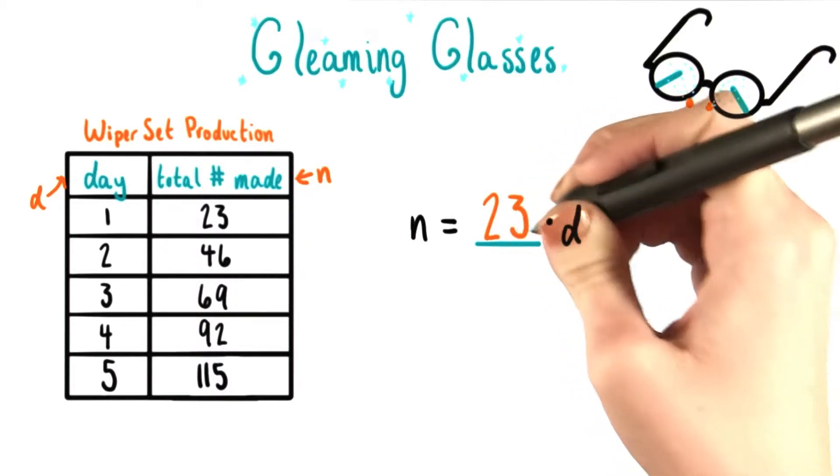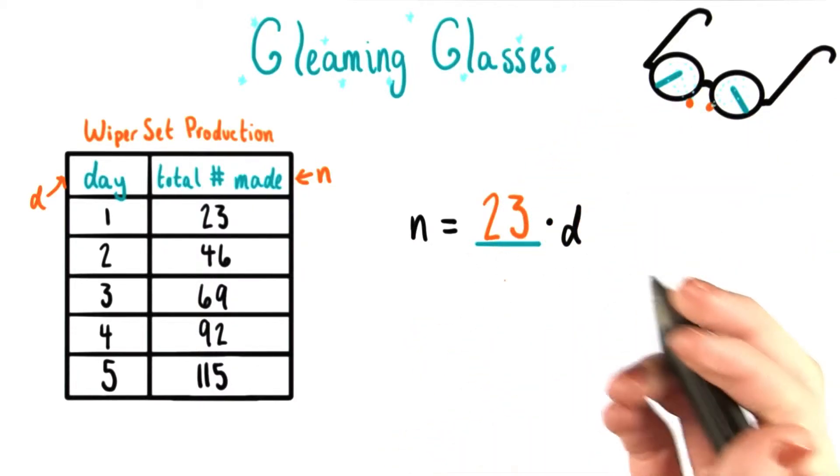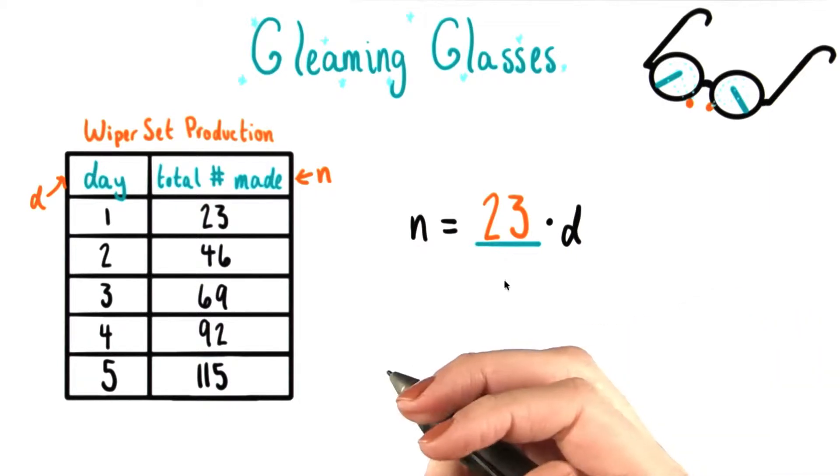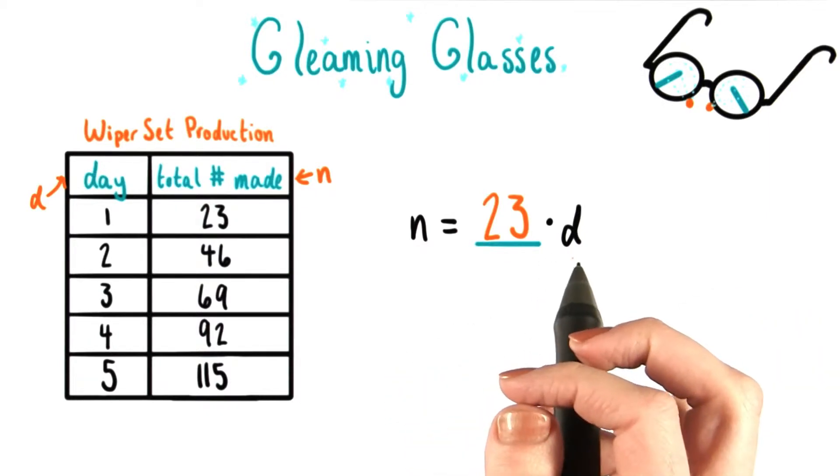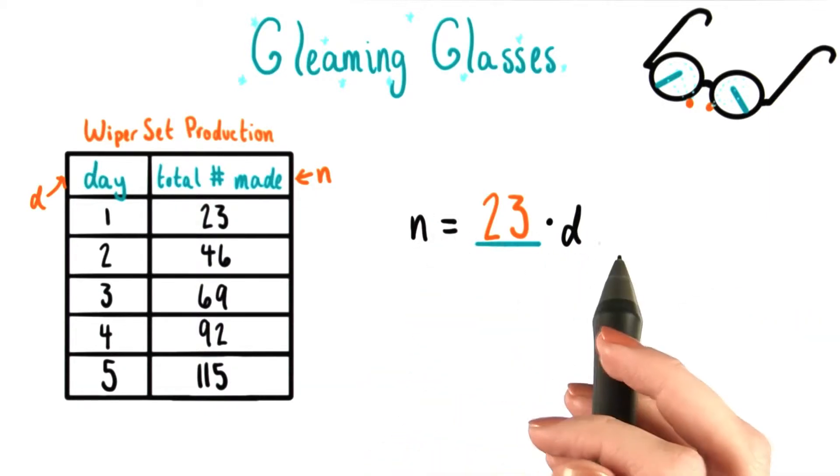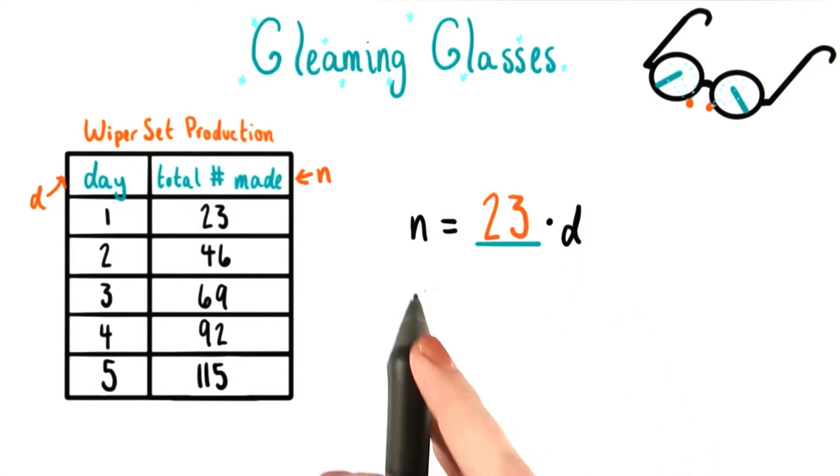The number that belongs here is 23. So how did I figure that out? Well, one way to check the solution is correct is by writing this equation and then substituting in values for d and for n and seeing if they match our table.